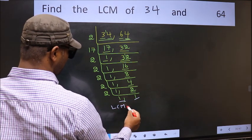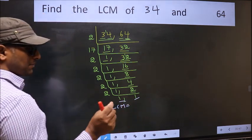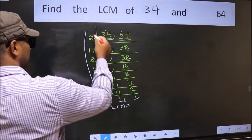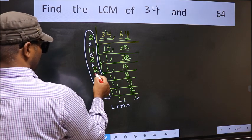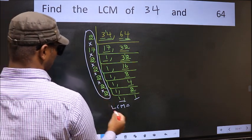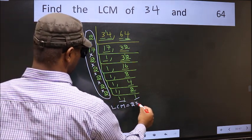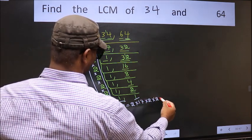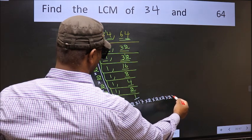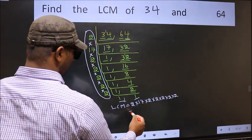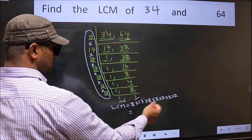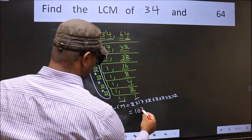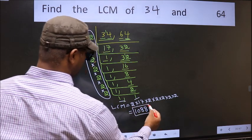So our LCM is the product of these numbers: 2 times 17 times 2 times 2 times 2 times 2 times 2. When we multiply these numbers, we get 1088 as our LCM.